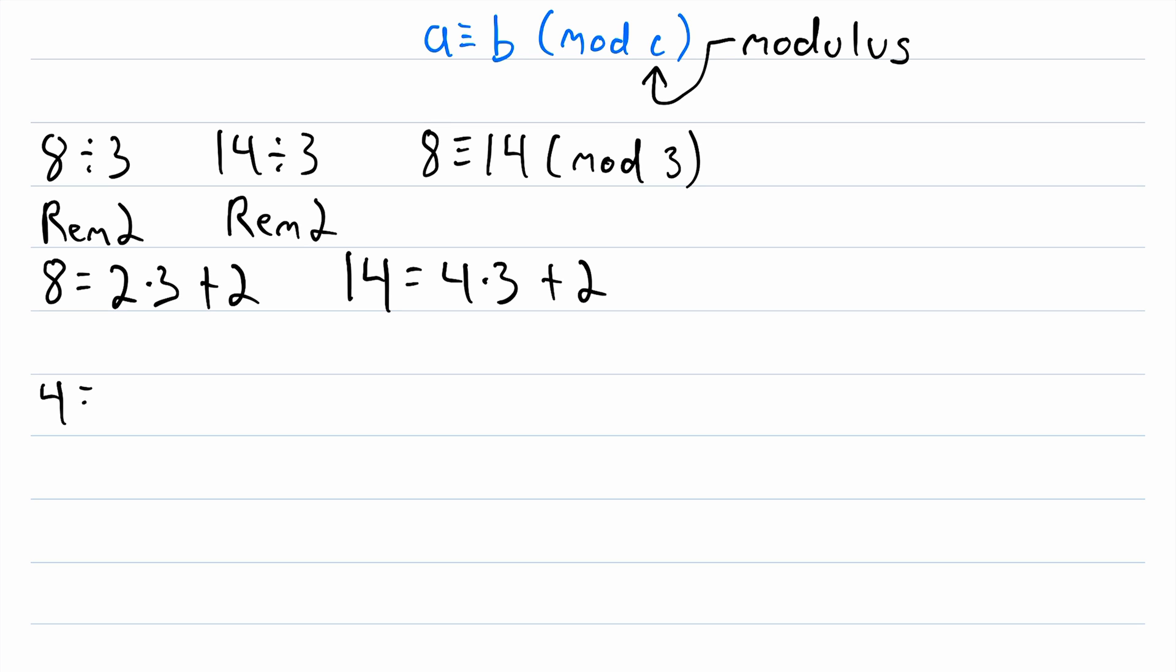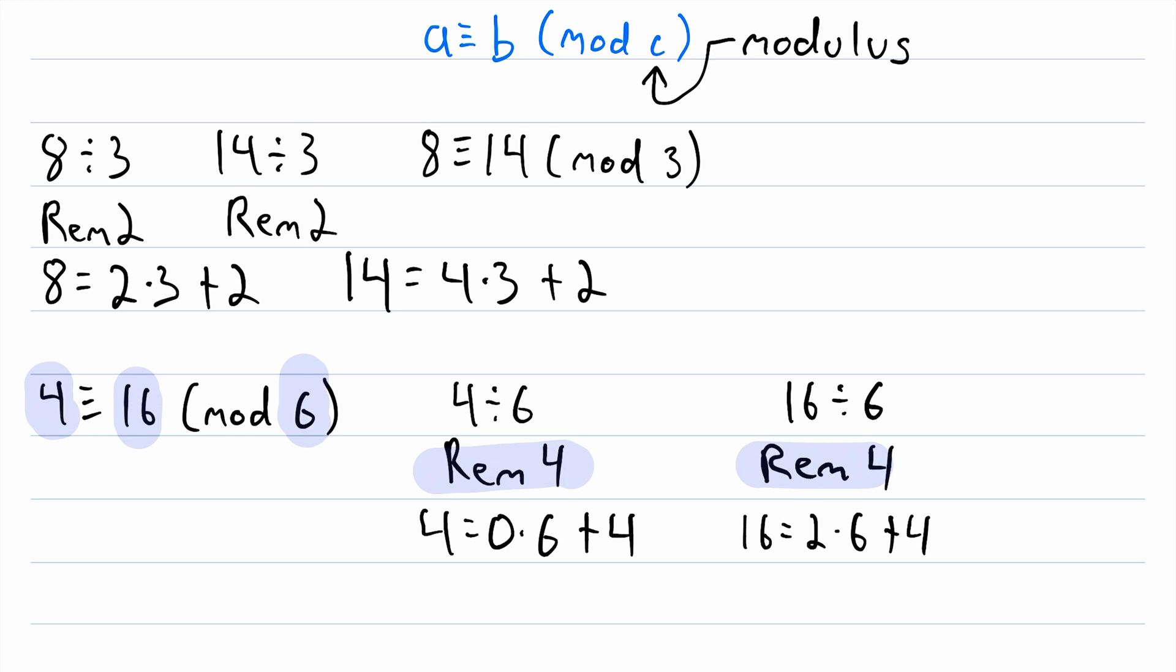Another congruence is that 4 is congruent to 16 mod 6. We see this is true because 4 divided by 6 gives a remainder of 4. 4 is equal to 0 times 6 plus 4. And of course, 16 divided by 6 also gives a remainder of 4. 16 is equal to 2 times 6 plus 4. So just as before, since 4 and 16 both have the same remainder when divided by 6, we say that these numbers are congruent mod 6.